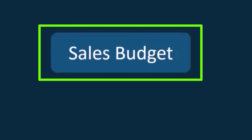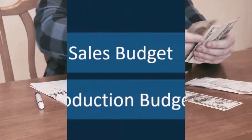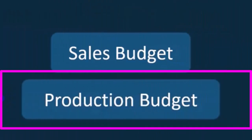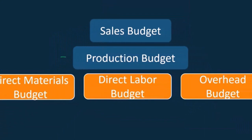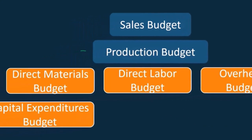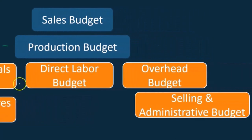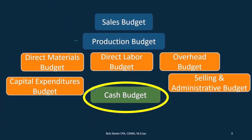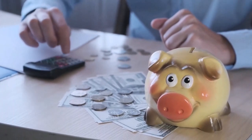So real quick we're going to go through the components of the master budget — they need to be done in this order. We've taken a look at most of these up until we get to the cash area. We have to do the sales budget first; once we have the sales budget we know what we're going to produce. Then we do the production budget, then the direct materials budget, the direct labor budget, and the overhead budget, as well as the capital expenditure and selling and administrative. Then we can take a look at the cash budget — that's where we're at. We're going to be bouncing back to some of these prior budgets in order to compile the cash budget.